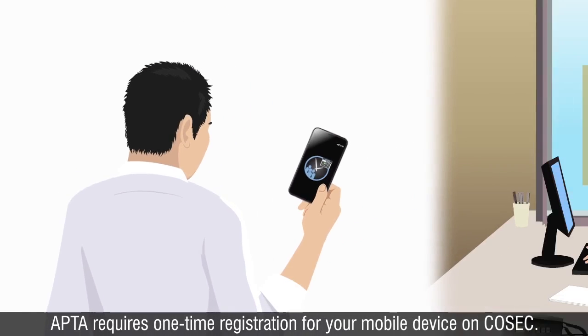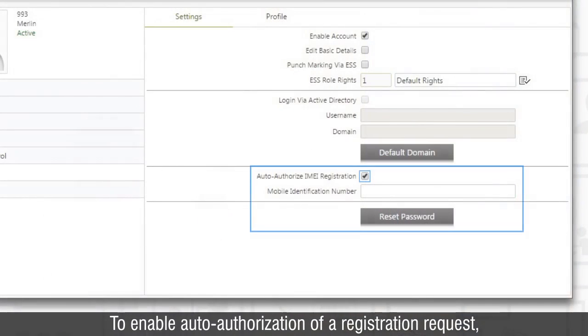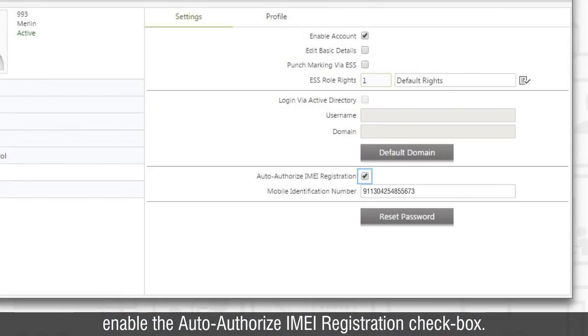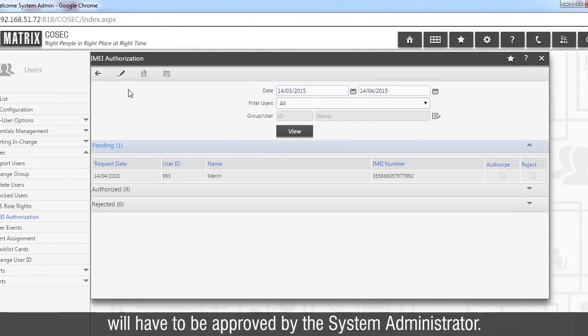Apta requires one-time registration for your mobile device on Cosec. To enable auto-authorization of a registration request, enable the Auto-authorize IMEI registration checkbox. If this option is disabled, all device registration requests from Apta will have to be approved by the system administrator.